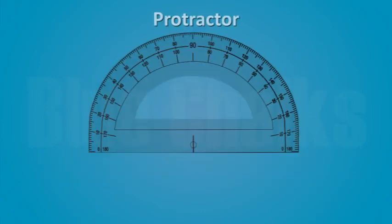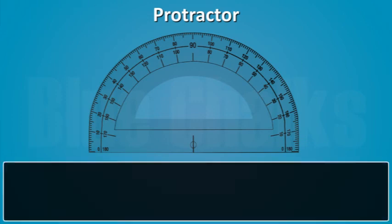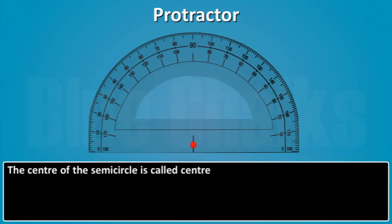The last is Protractor. It is semicircular in shape. The center of the semicircle is called center or midpoint of the protractor.